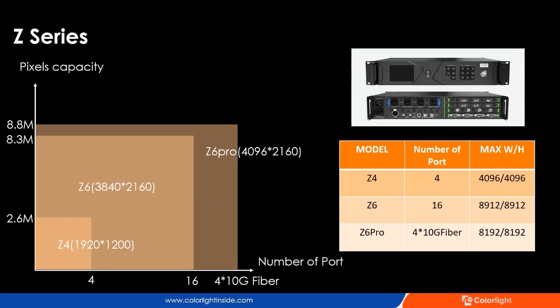The last series is Z-Series. Basically, Z-Series has three members: Z4, Z6, and Z6 Pro. Compared with the X-Series, Z-Series provides more high-end features like HDR, low latency, and 3D. Z4 is an entry-level 2K processor and it can handle 2.6 million pixels. Z6 can handle 8.3 million pixels.